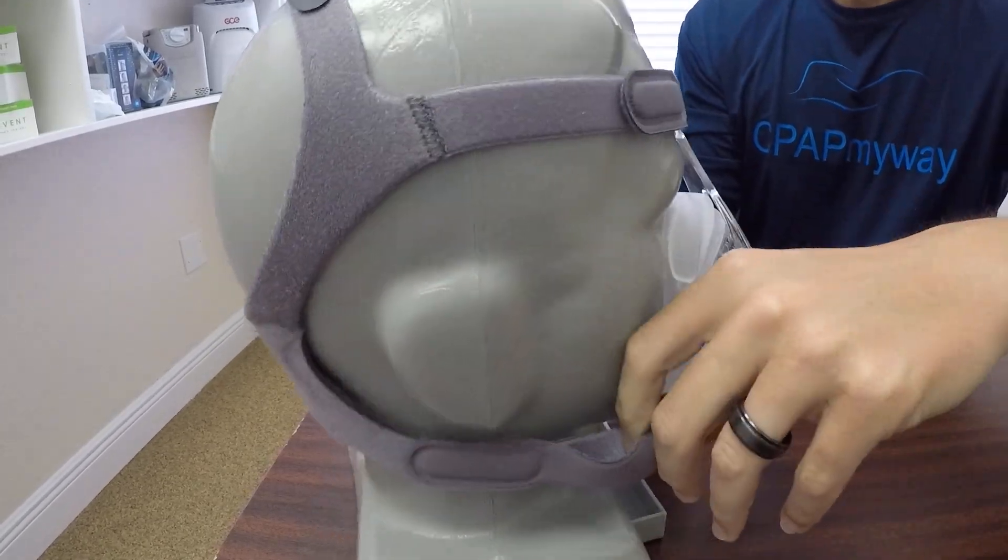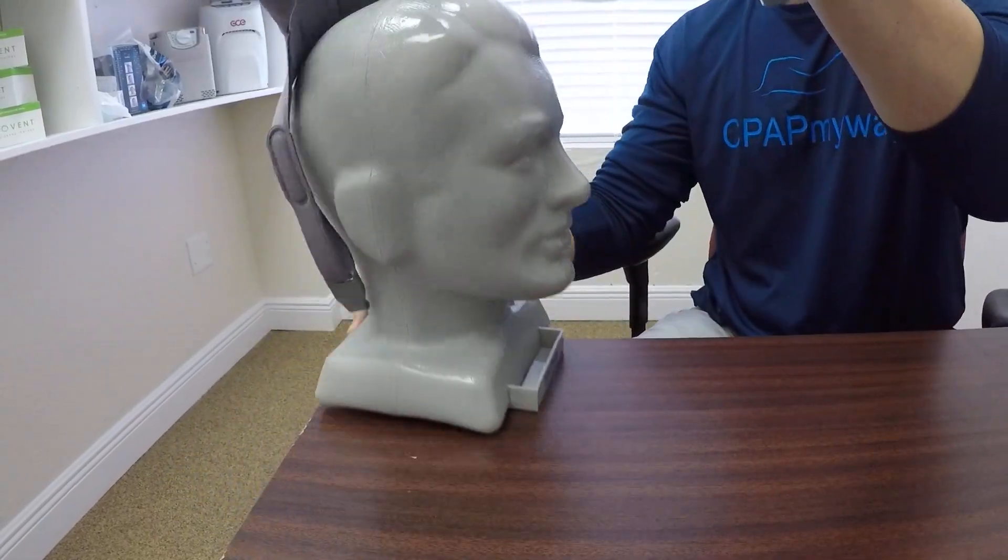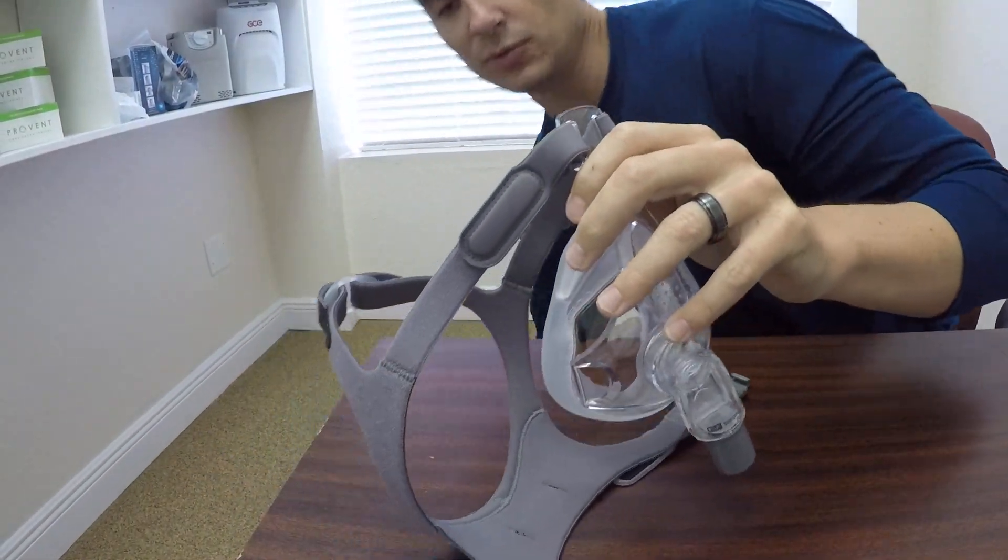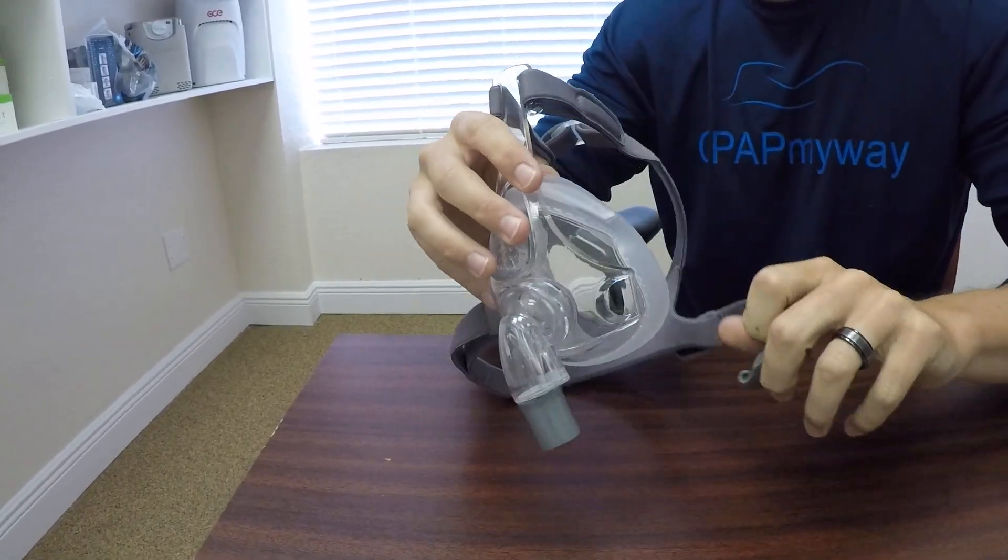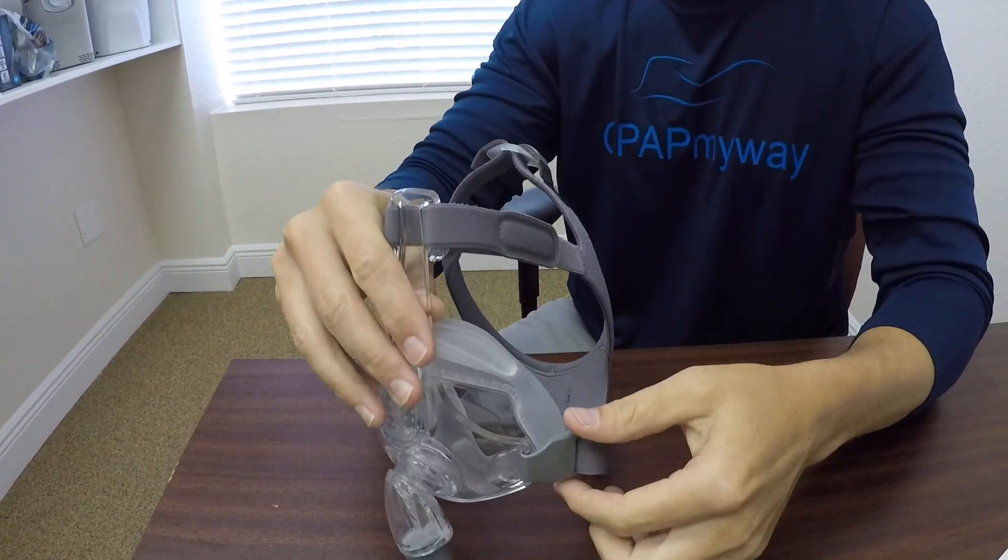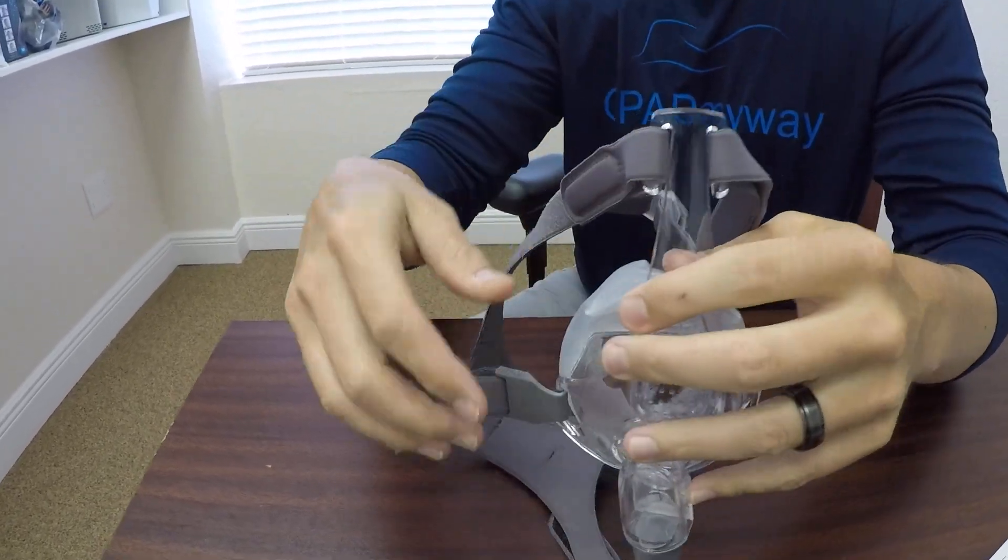Alright, take it off and look at it a little closer here. So as you noticed, I removed the bottom hooks on this. The appropriate way to take it on and off is to remove both bottom hooks by pressing down and slide right off.